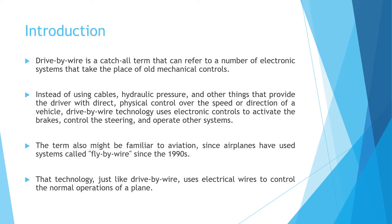Introduction. Drive-by-wire, or DBW, is a catch-all term that can refer to a number of electronic systems that take the place of old mechanical controls. Instead of using cables, hydraulic pressure, and other things that provide the driver with direct physical control over the speed or direction of wheels, drive-by-wire technology uses electronic control to activate the brakes, control the steering, and operate other systems.